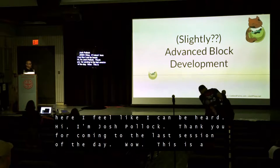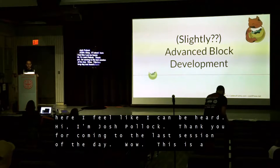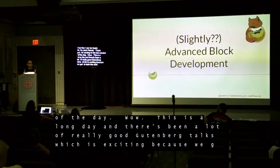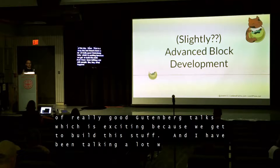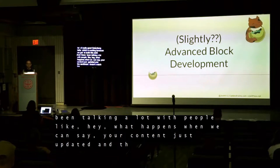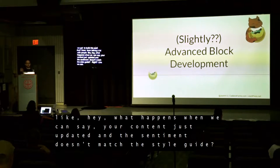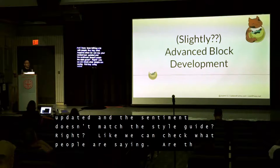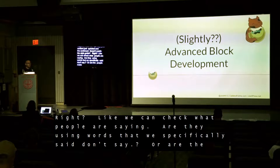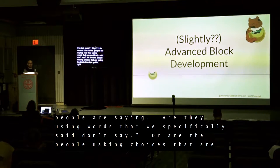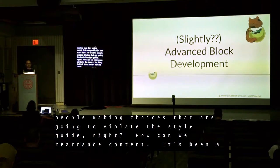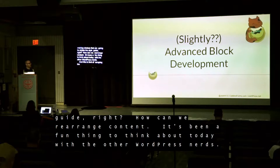This is a long day and there's been a lot of really good Gutenberg talks, which is exciting because we get to build this stuff. I've been talking with people about what happens when we can say your content just updated and the sentiment doesn't match the style guide. We can check what people are saying and whether they're using words we said don't use, or making choices that violate the style guide. How can we rearrange content? That's been a really fun thing to think about today with the other WordPress nerds, and this talk is kind of scraping the surface of how we might do those things.